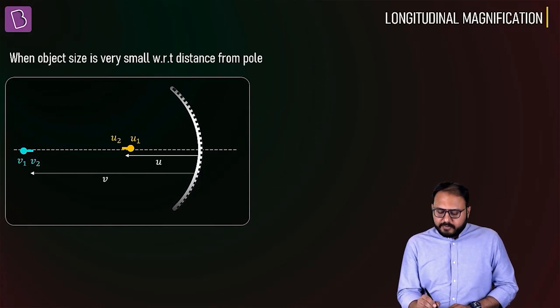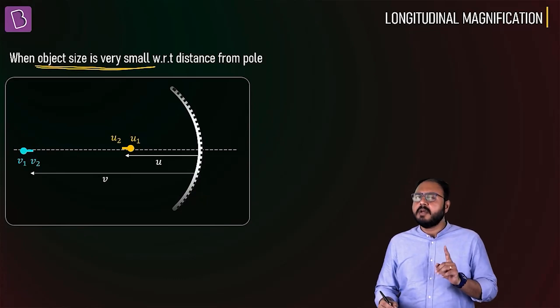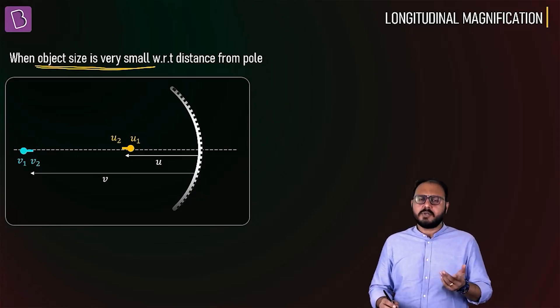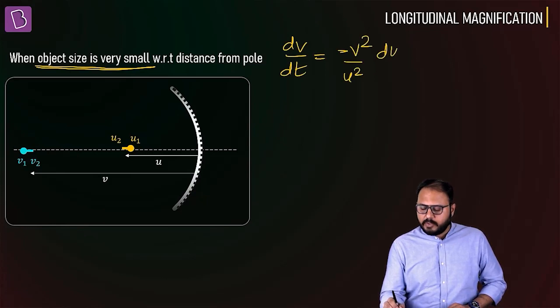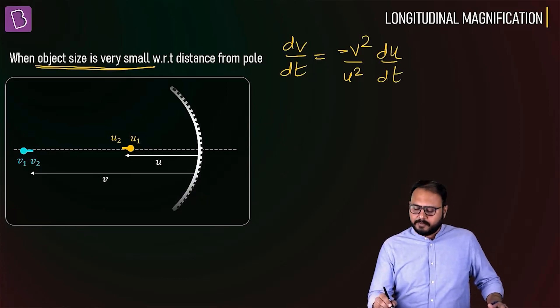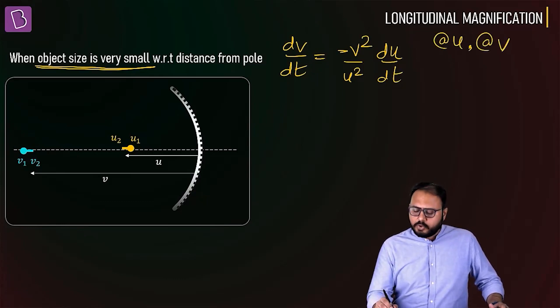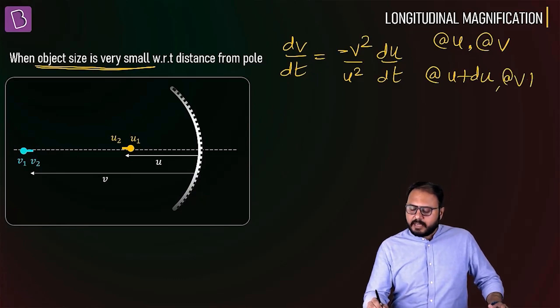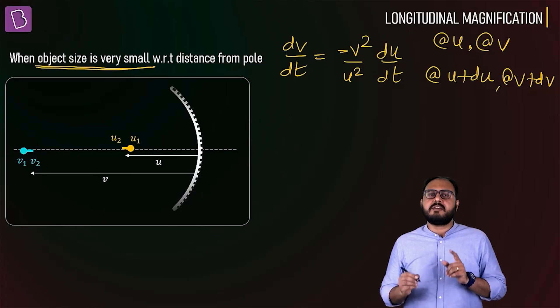What if the displacement of the object along the principal axis is very small? 1mm is very small compared to 60 centimeters. So dv by dt equals minus v squared by u squared times du by dt. If u changed to u plus du, then v becomes v plus dv, where du and dv are very small changes.